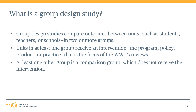Group design studies measure the effectiveness of an intervention by comparing outcomes for study units between two or more groups, where those units might be students, teachers, or schools. In a group design study, units in at least one group must receive an intervention — the program, policy, product, or practice that is the focus of the WWC's review. For instance, the intervention might be a reading curriculum, a dual enrollment program, a teacher professional development program, or an instructional practice for teaching mathematics.